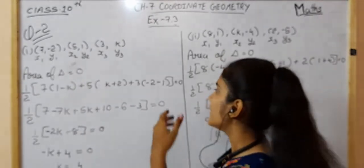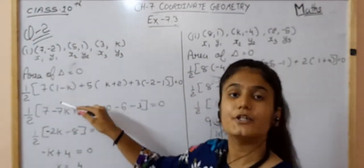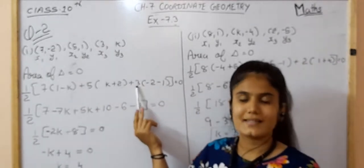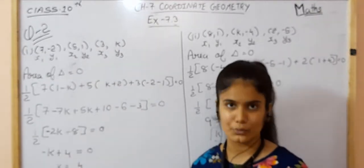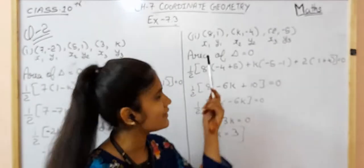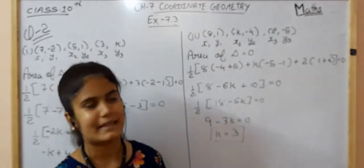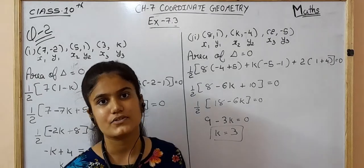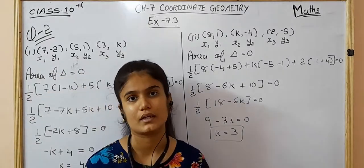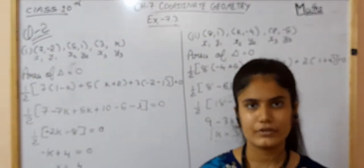Using the area of triangle formula with area equal to zero: 1/2 into X1(Y2 − Y3) + X2(Y3 − Y1) + X3(Y1 − Y2) = 0. Solving, we get k equals 4. Similarly, for the second set of collinear points (2, 1), (k, −4), (2, −5), using the same method with area equal to zero, we get k equals 3. Pause the video to note the solution.